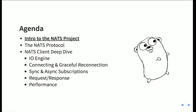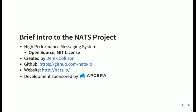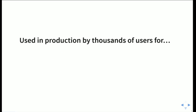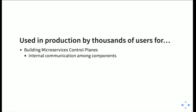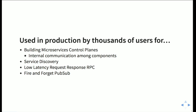The NATS project is a high-performance messaging system, open source under the MIT license. It was created by Derek Collison in 2009, originally in Ruby, then rewritten in Go in 2012, and the project benefited a lot from that change. You can find it under the NATS.io organization — development is sponsored by AppSera. It's been used in production by dozens of users for building microservices, control planes — one of the main use cases for Cloud Foundry — service discovery, low-latency request/response RPC, or fire-and-forget pub/sub.